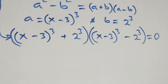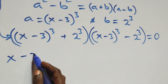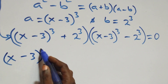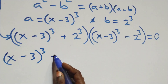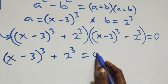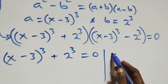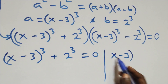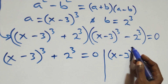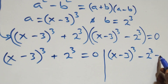Then here we have two possible cases. The first one: x minus 3, 4 raised to power 3, plus 2 raised to power 3, equals to 0. Or we have x minus 3, 4 raised to power 3, minus 2 raised to power 3, equals to 0 here.